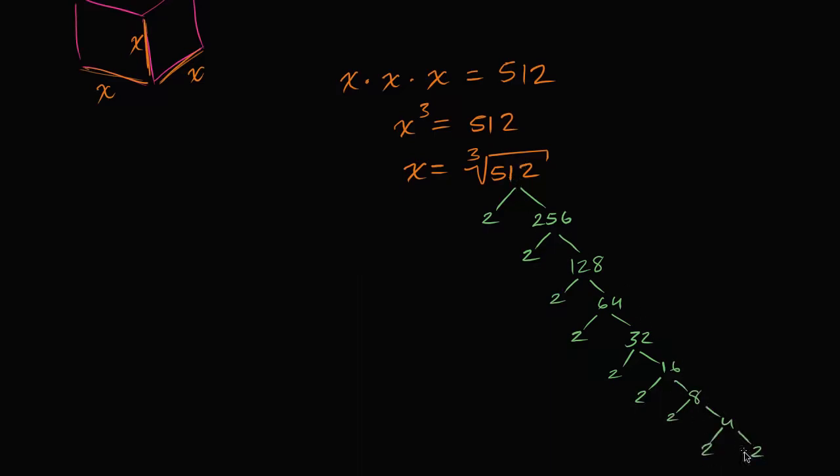So 512, that's the same thing as 2 to the, let's see, you have 1, 2, 3, 4, 5, 6, 7, 8, 9. That's 2 to the ninth power.